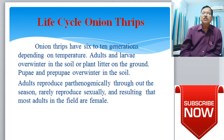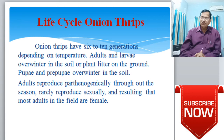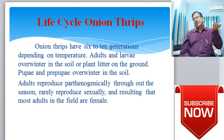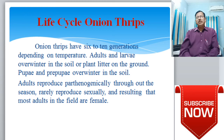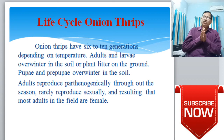The life cycle of onion thrips: onion thrips have six to ten generations per year, depending on temperature and environment. In summer, increased temperature speeds up generation and egg hatching. In winter, lower temperatures increase the egg hatching period. So six to ten generations are completed according to environmental adaptability.